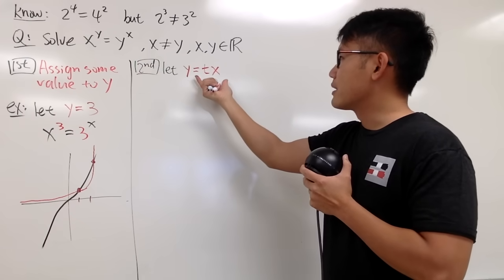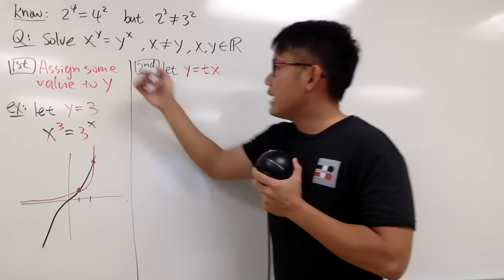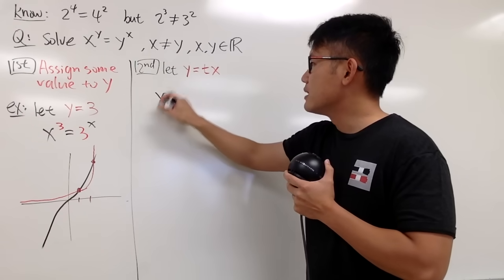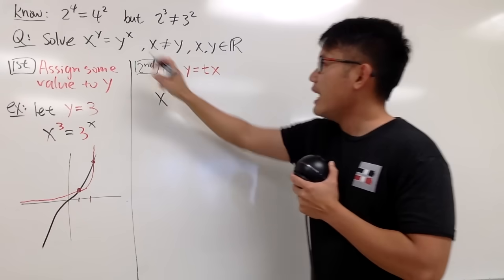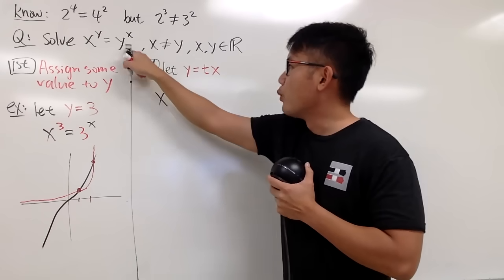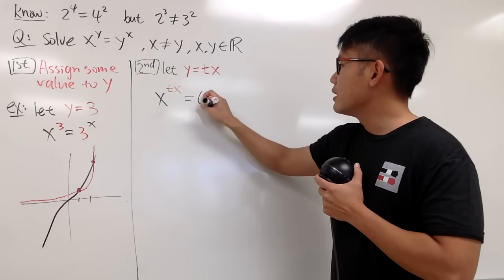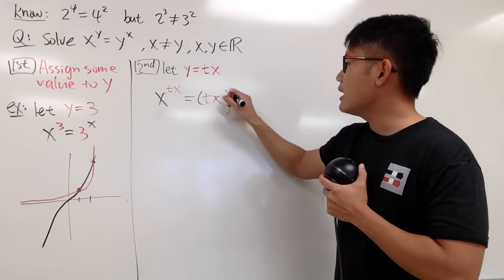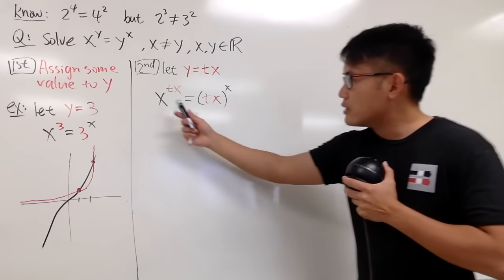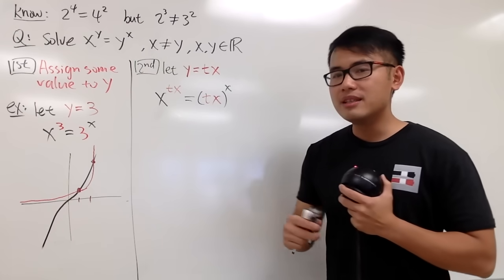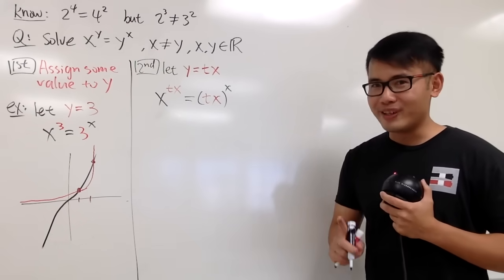Suppose that we have y is equal to t times x. Let's plug in this information into this equation. First, I will have the x as it is, but this y is going to be t times x now. And then, this is equal to the y is t times x, but don't forget to put parentheses, and then put in the t times x for the y, and then raise that to the x power. So now, I have this equation. It seems slightly more ridiculous, but don't worry, I will take care of that.